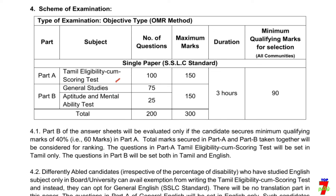Part A is Tamil — there are 100 questions. Part B is General Science. GS is max — GS is 75 questions, and Maths is 25 questions. Total number of questions is 200. Every question is 1.5 marks, so 1.5 mark each. Total mark is 300 marks.